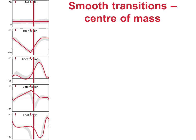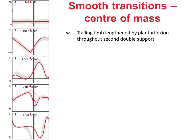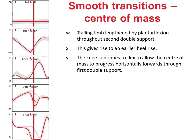So this allows us to tidy up the remaining unexplained features of the gait graphs. The length of the trailing limb is increased by rapid plantar flexion of the ankle, which in turn leads to heel rise. Finally, the knee flexes through first double support to allow the centre of mass to continue to move forwards, preserving the kinetic energy in the trunk.